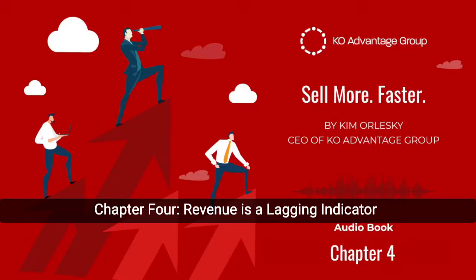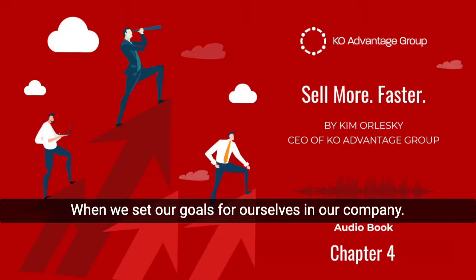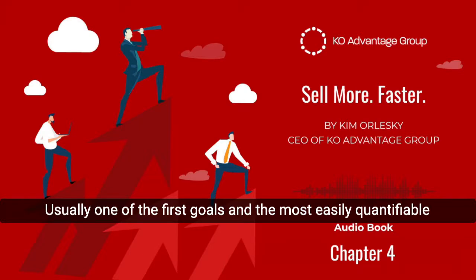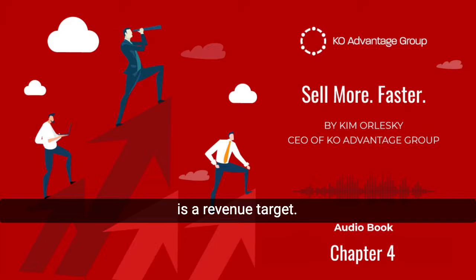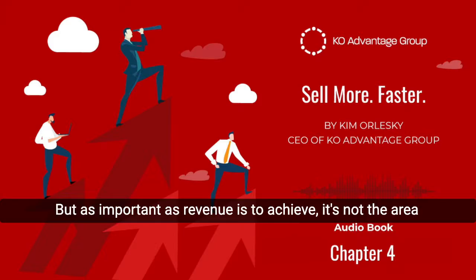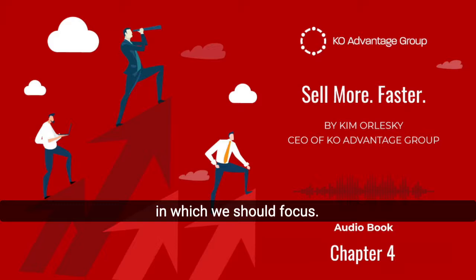Chapter 4: Revenue is a Lagging Indicator. When we set our goals for ourselves and our company, usually one of the first goals, and the most easily quantifiable, is a revenue target. But as important as revenue is to achieve, it's not the area on which we should focus.